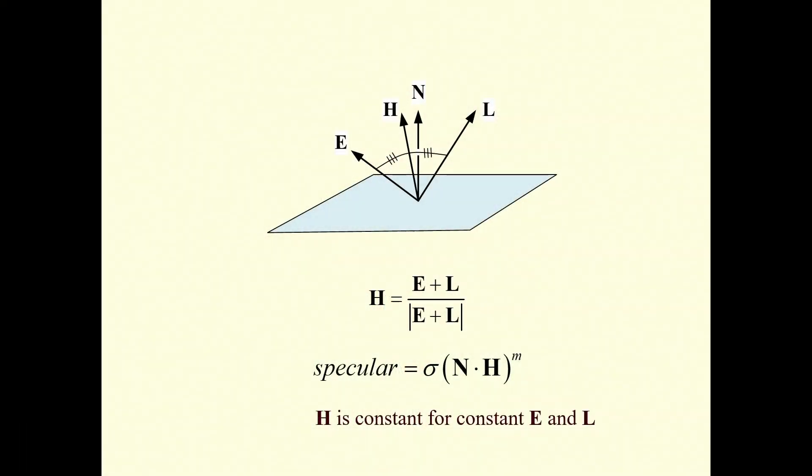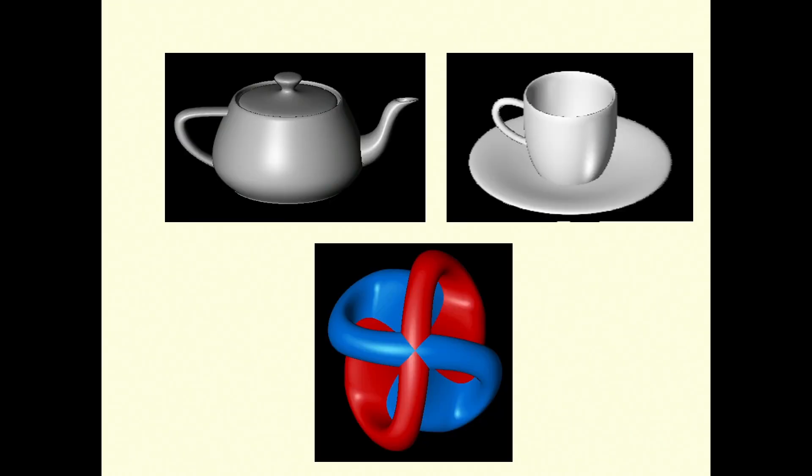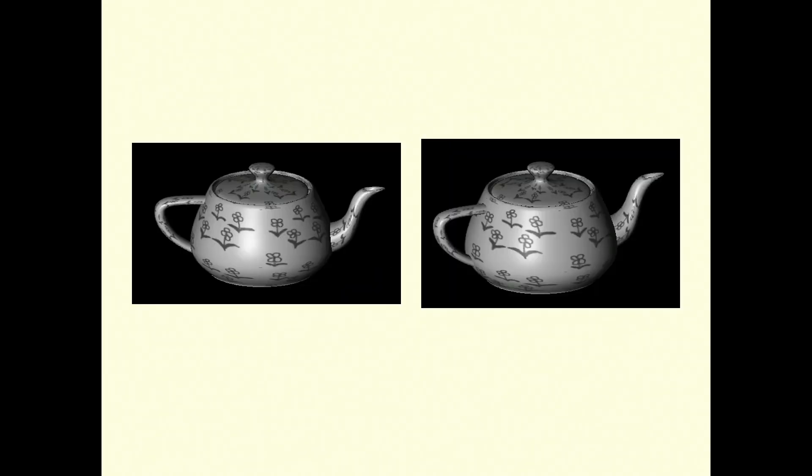The neat thing about this is that H is constant if E and L are constant, which is typically an approximation that you use. So you only have to calculate H once for the scene, and then just dot it with the different normal vectors for the different shapes you've got on the screen. So these are the pictures you get using some of Martin's models and a mathematical object from Nelson Max. Adding Catmull's texture mapping on top of that, you get the highlights stay put as the thing rotates, so the texture moves but the highlights stay put.